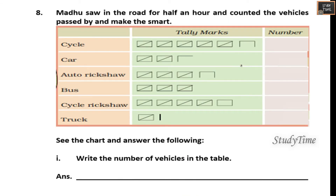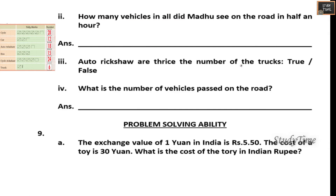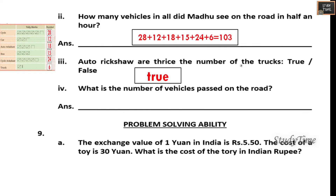Madhu stood on the road for half an hour, counted vehicles that passed by, and made a chart. Write the number of vehicles in the table — add them up. Are autos three times the number of trucks? True, because autos are 24 and trucks are 6. What is the total number of vehicles that passed on the road?